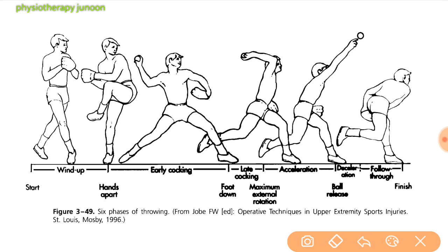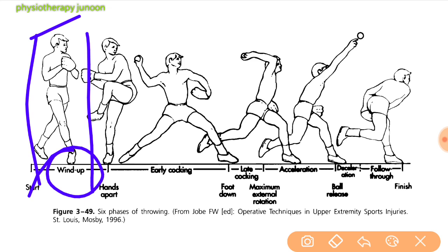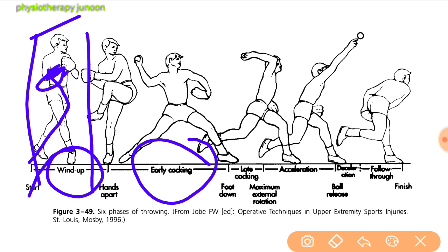The first stage is wind-up. The wind-up stage serves as the preparatory phase and includes body rotation. It ends when the ball leaves the non-dominant hand. The next phase is the early cocking phase.